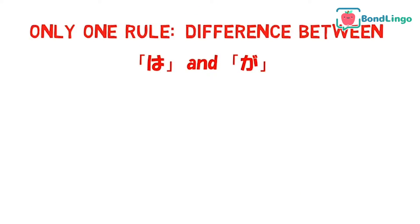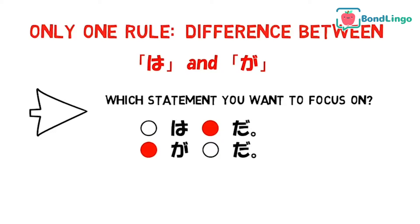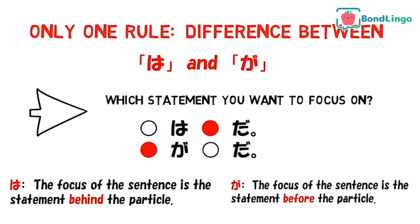Now I'm going to tell you the only difference between ha and ga. The difference is which statement you want to focus on — behind the particle or before the particle. Ha is used to indicate the topic of a sentence; the focus of the sentence is the statement behind the particle ha. Ga is used to indicate the subject of a sentence; the focus is the subject before the particle. This is the only rule you need to know about their difference, and most of the rest can be explained based on this rule.